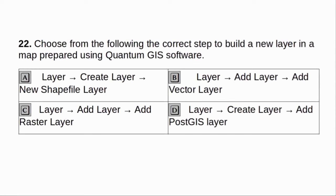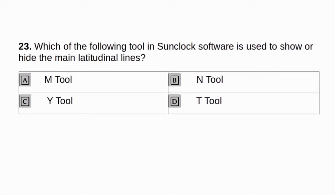Choose from the following the correct step to build a new layer in a map prepared using Quantum GIS software. A. Create layer > New shapefile layer. B. Add layer > Add vector layer. C. Add layer > Add raster layer. D. Create layer > Add PostGIS layer. Answer: A. Which tool in SunClock software is used to show or hide the main latitudinal lines? A. M tool. B. N tool. C. Y tool. D. T tool. Answer: D. T tool.